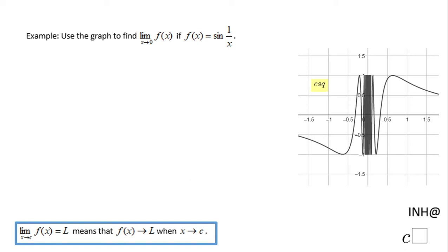Welcome back to Inn Help at C squared. In this example, we need to find the limit when x approaches zero of f(x), and f(x) is the function sin(1/x).